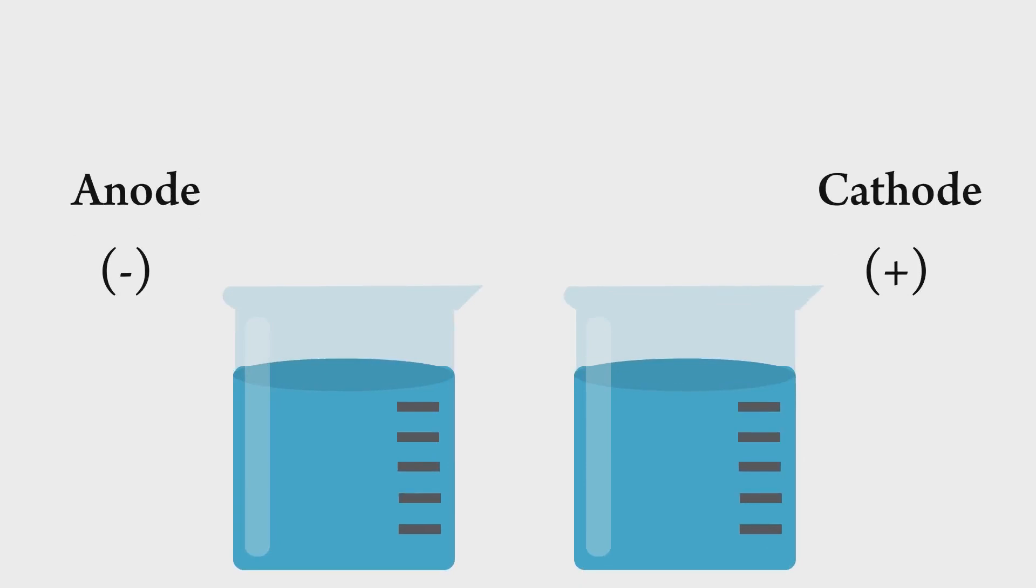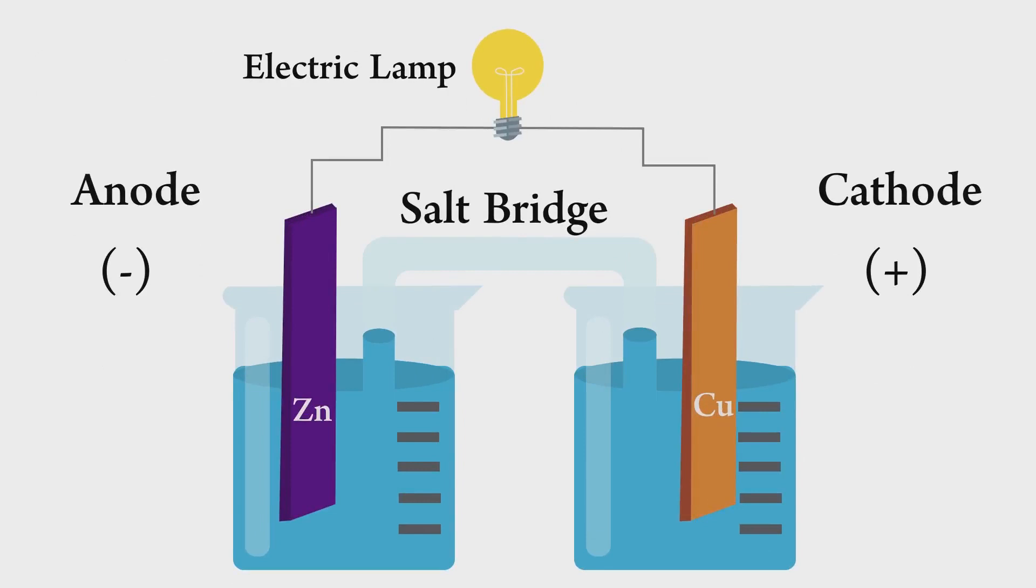We are going to talk about galvanic cell. Anode with negative charge is zinc electrode dipped in zinc solution. Cathode with positive charge is copper electrode dipped in copper solution.